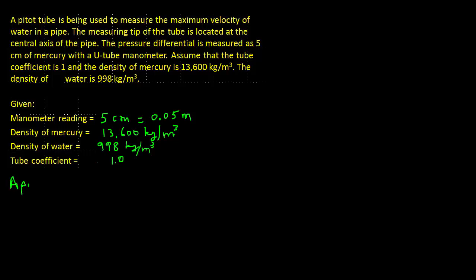Our approach is to use the equation for velocity for a pitot tube. That equation is U equals C times square root of 2G times rho m minus rho f times Zm divided by rho f.